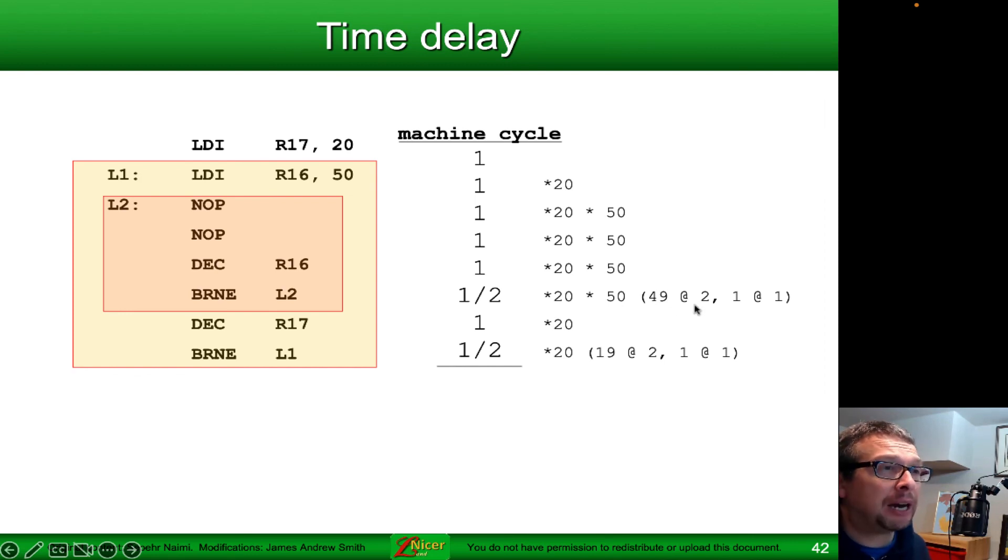However, on the 50 right here, 49 times it's done at two cycles. And once it's done at one cycle, and that's repeated 20 different times. Then we have the decrement and that other branch if not equals. This is done 20 times because the initial LDI is 20. And that 20 is done 19 times at two cycles and once at one cycle. This can be a little confusing and complicated.